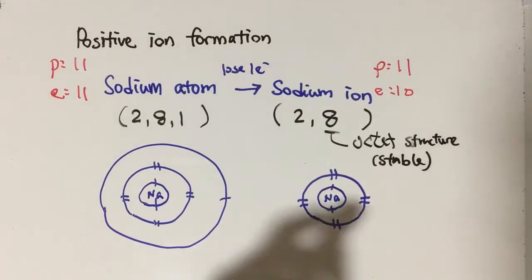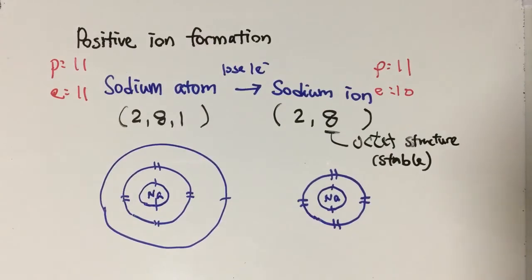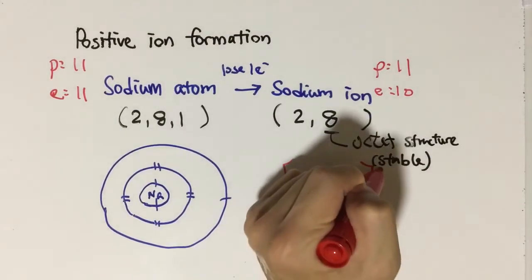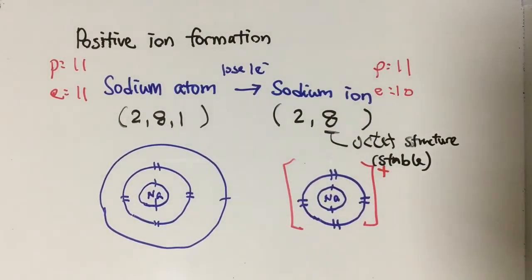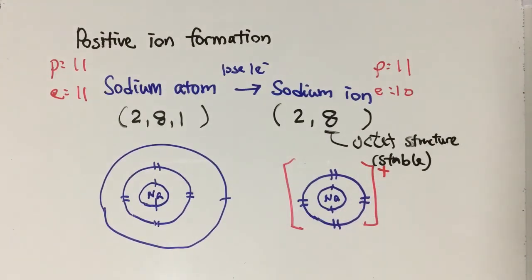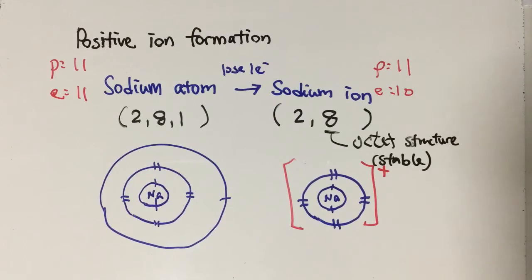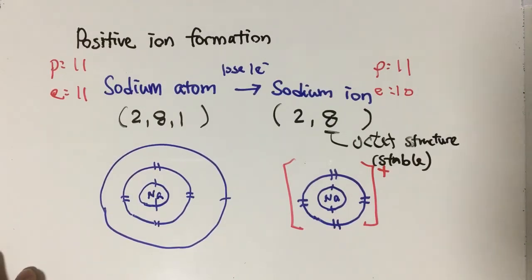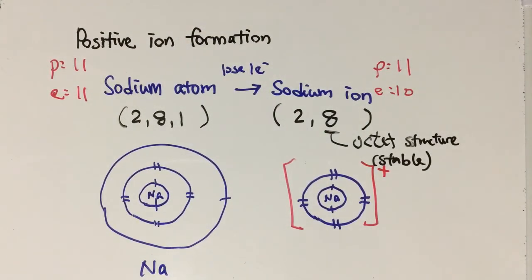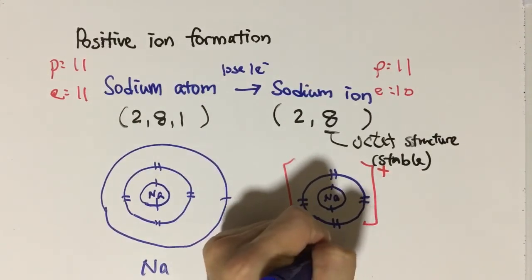We can illustrate this in the electron diagram by adding a middle bracket and writing a plus on the top right-hand side. That plus means 1 positive, and this is the electron diagram of sodium ion. Last but not least, we can also use a symbol to show sodium atom and sodium ion — the symbol for sodium atom is simple, and for sodium ion we add the plus superscript.